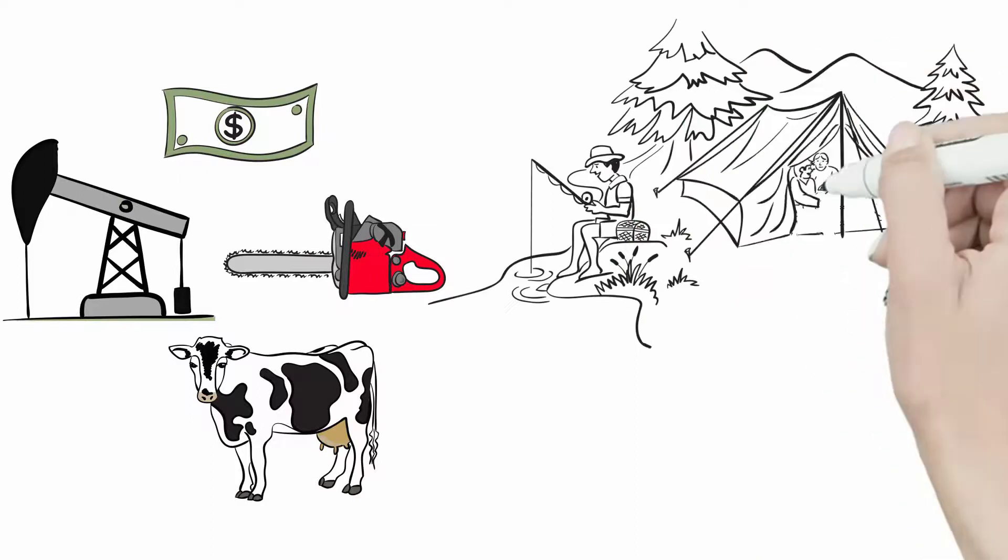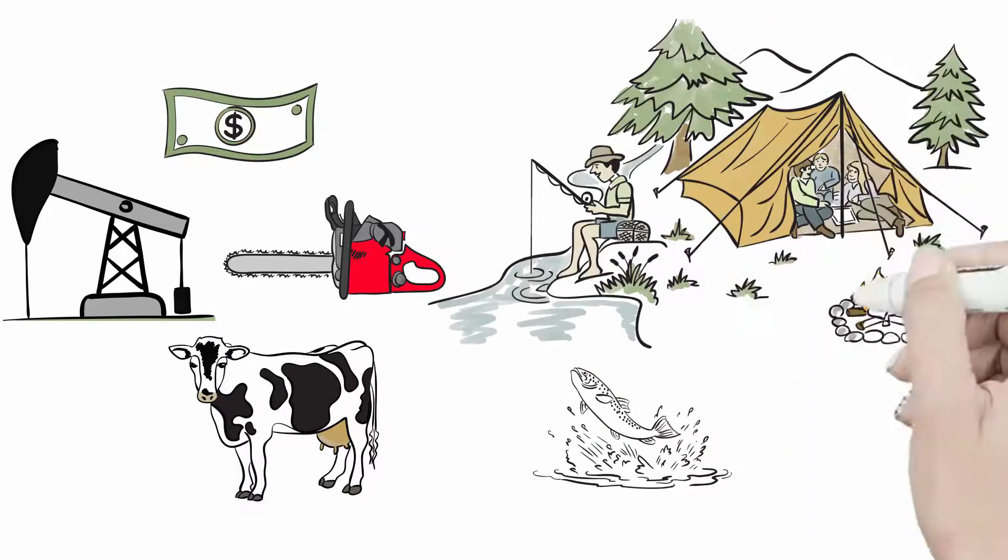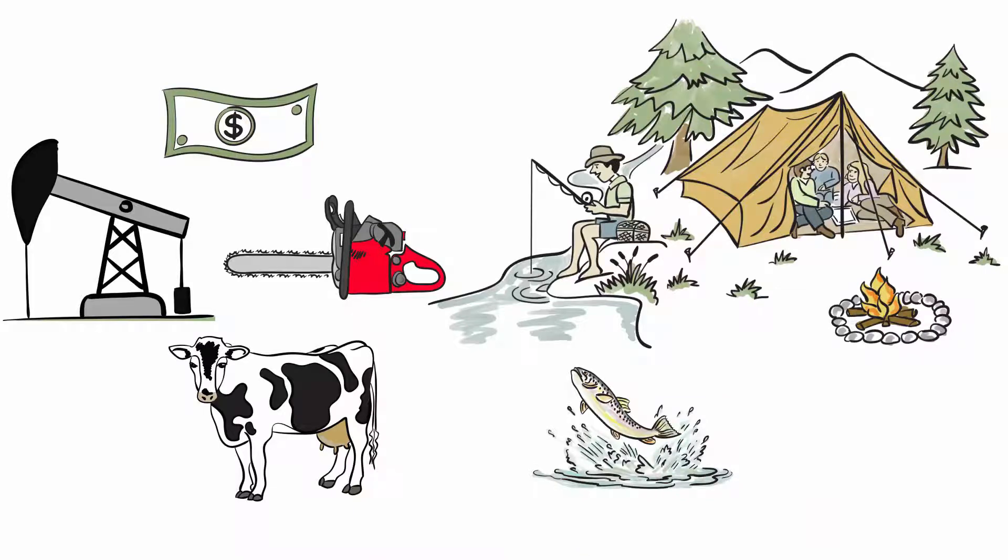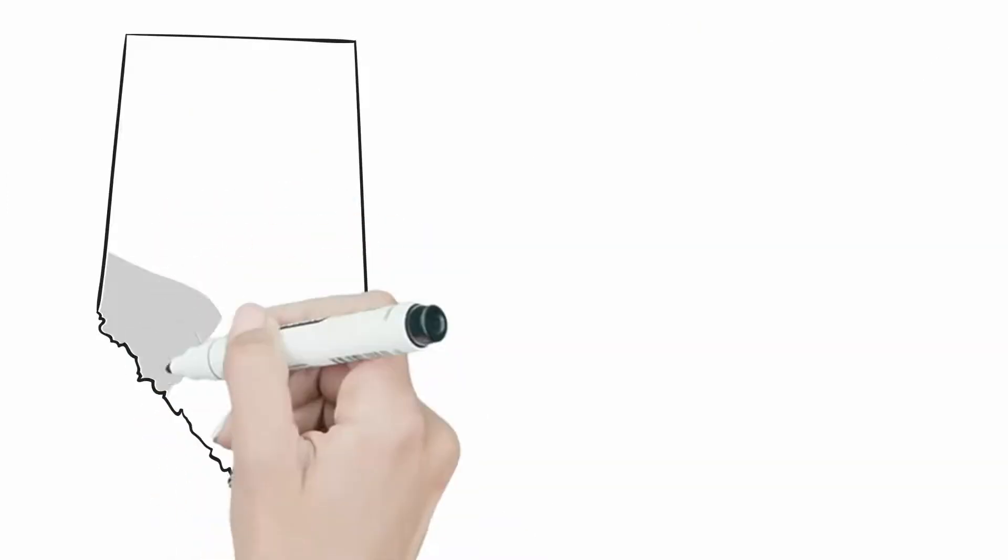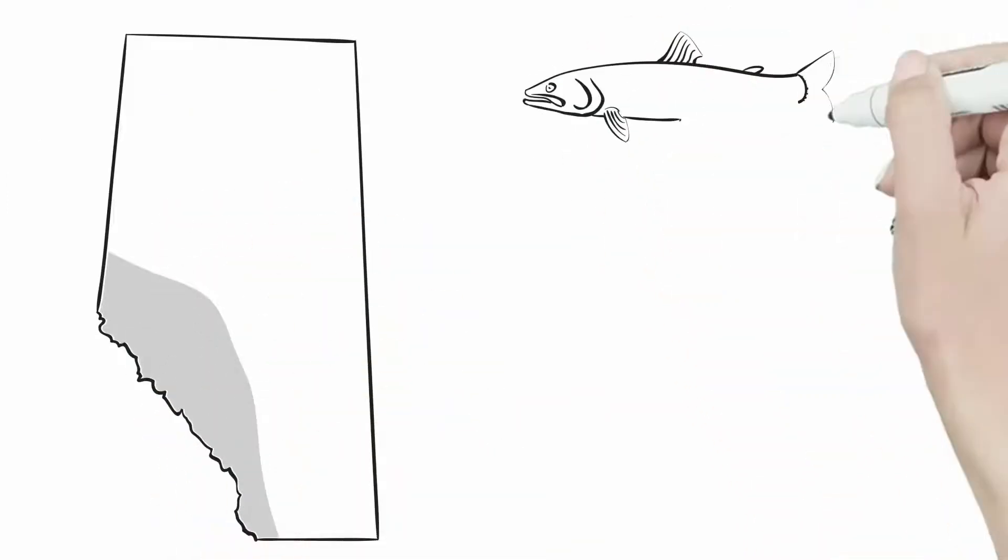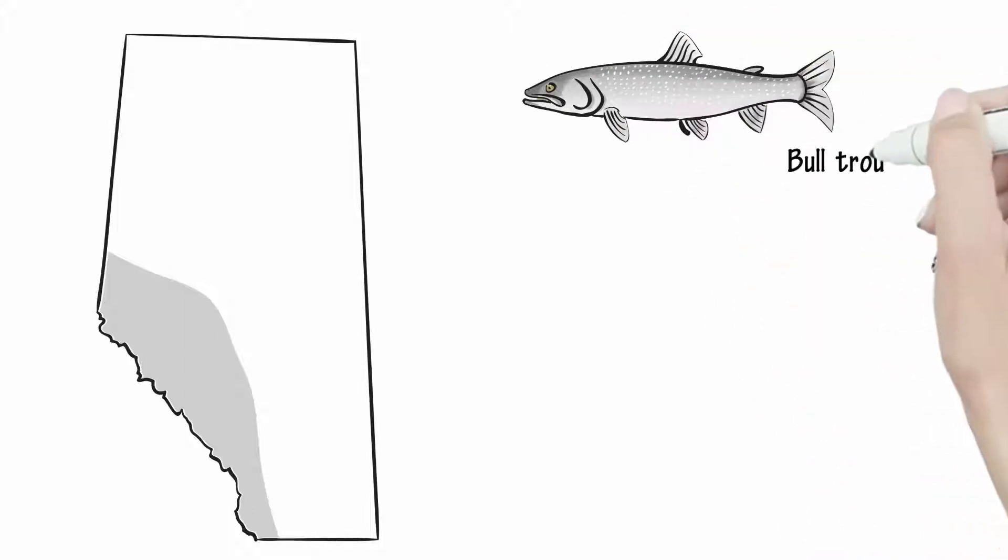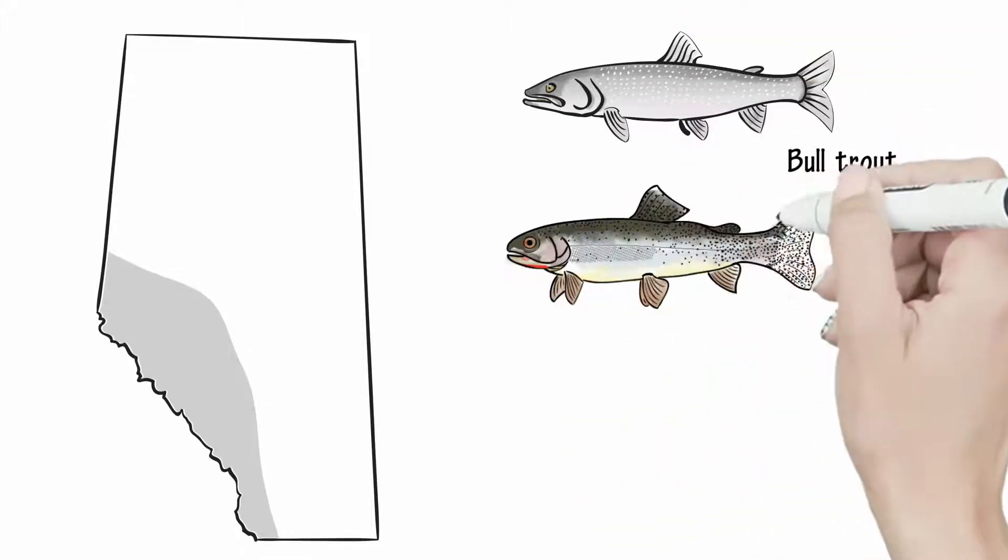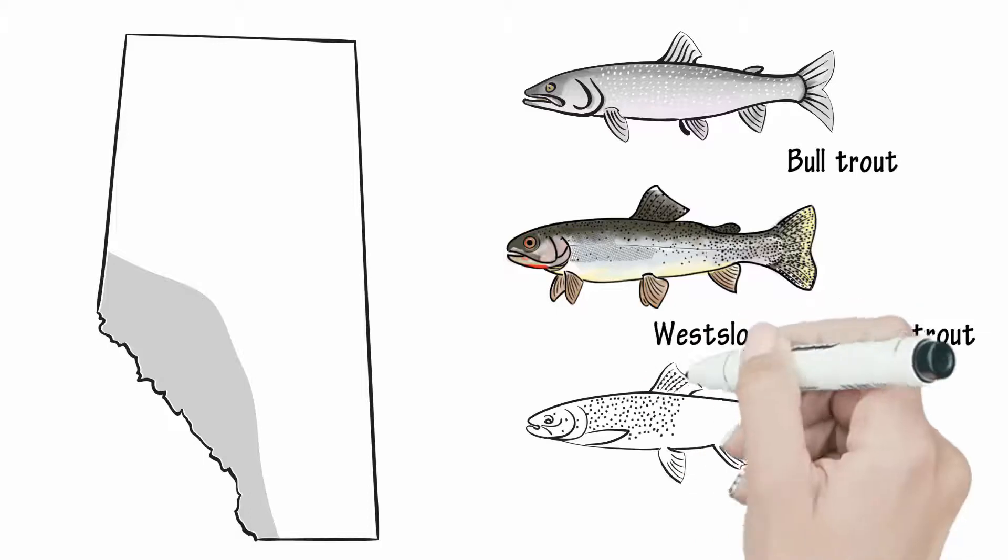Unfortunately, this has come at the cost of widespread and severe reductions in cold-water fish populations, and many native species are now at risk. This includes Alberta's provincial fish species, the bull trout. Understanding exactly why native fish populations have declined is difficult.